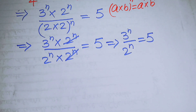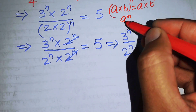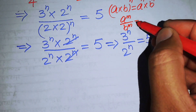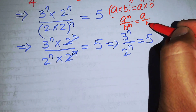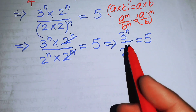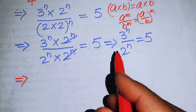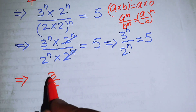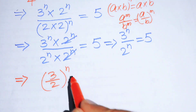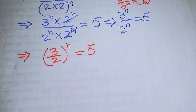We now apply another exponential law: a^m / b^m = (a/b)^m. Applying this law to the left-hand side, the expression becomes (3/2)^n equals 5.